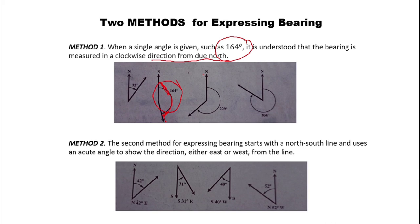Method two: the second method for expressing bearing starts with the north-south line and uses an acute angle to show the direction either east or west from the line. So take note it starts with north or south. When expressed using the north or south line, that is method two. Method one is not expressly stated — direction from due north. Method two is expressed, starting with north or south.